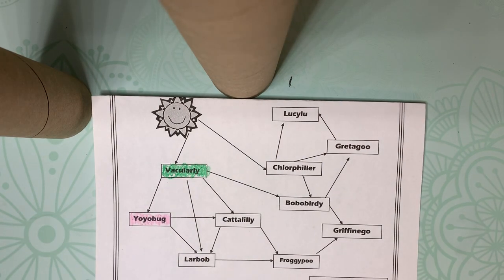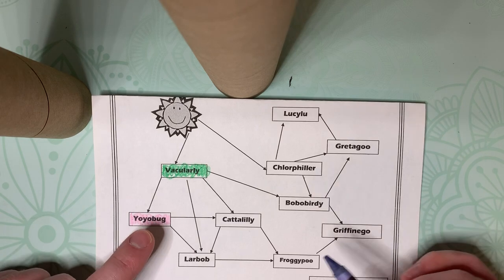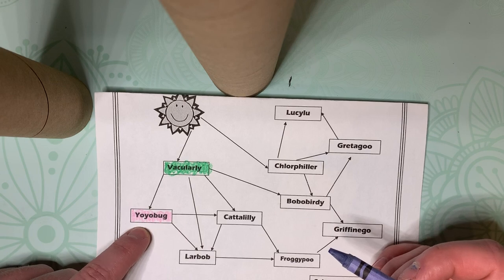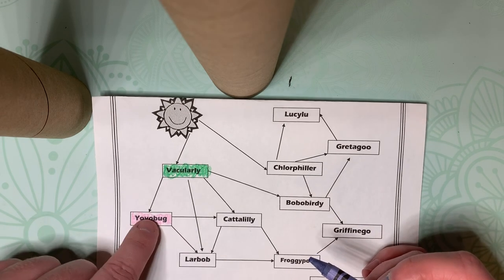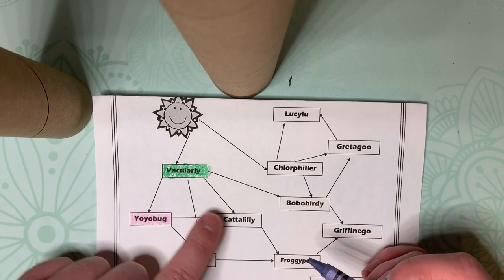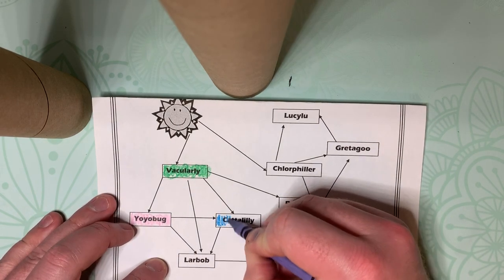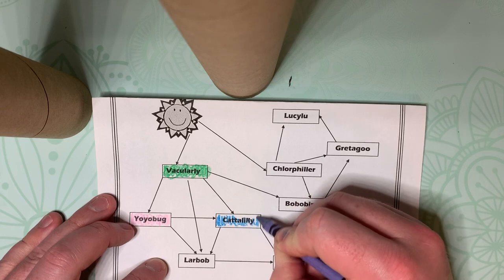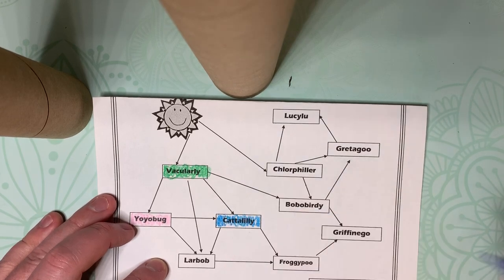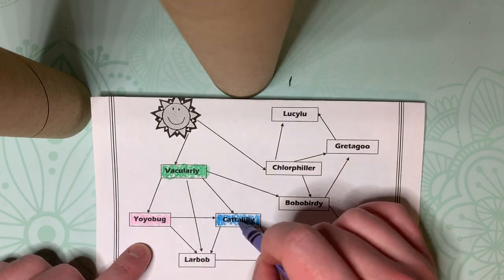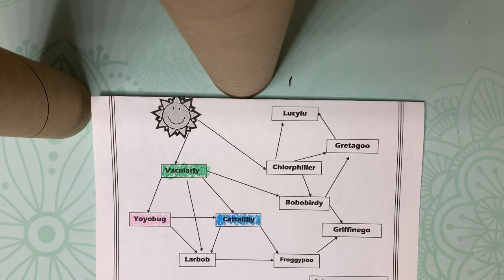An omnivore is blue. An omnivore eats both. So, we want to find something that eats both plants and herbivores. So, it'll be a consumer for animals and a consumer for plants. So, it looks like the catalouly. It kind of sounds like a flower, but it's an animal in this one. So, it looks like catalouly eats producers and consumers. So, it counts as an omnivore.